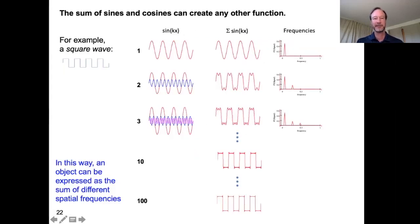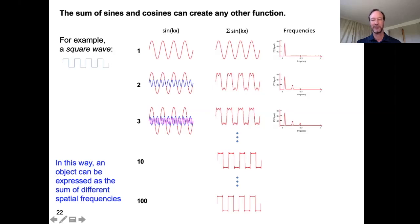Another important concept is that the sum of sines and cosines — the Fourier series — can create any function. For example, a square wave can be represented approximately with a single sine wave, but it doesn't capture the sharp boundaries. Adding more sine waves progressively sharpens the result. In this way, any object can be expressed as a sum of different spatial frequencies. A brain, for example, can be represented as a sum of different spatial frequencies, which is essentially what we're sampling when acquiring data in k-space.